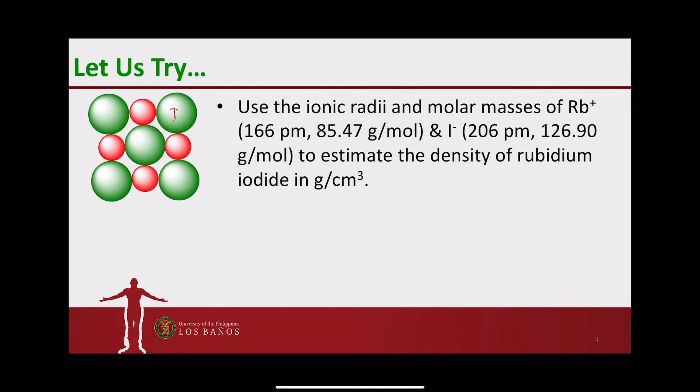So this would be the iodide ions. The red ones would be the rubidium. So from here to here, this is actually the side length. So the side length is measured by adding up the diameter of rubidium, which is essentially twice the radius of rubidium.